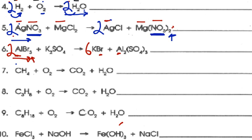Our Al's and Br's are balanced. We check K's: we have 6 on the product side but only 2 on the reactant side, so we put a 3 in front — 3 times 2 is 6, so K's are balanced. We have 6 Br's and 6 Br's, 2 Al's and 2 Al's. We also check SO₄: we have 3 SO₄s on each side because the coefficient distributes through — totally balanced. Alternatively, you could have started with SO₄ first, putting the 3 in front. Either way works.